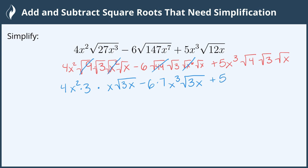And the last one we have 5x³. The square root of 4 is 2 and the square root of 3 and the square root of x do not simplify out so they'll remain in the radical.